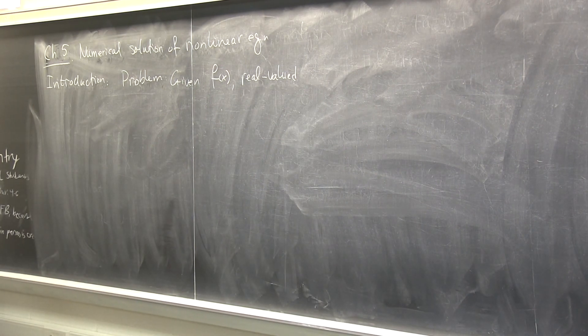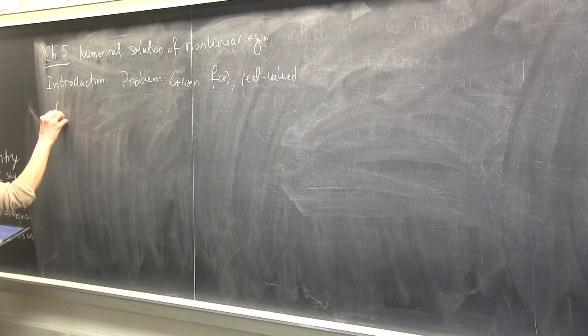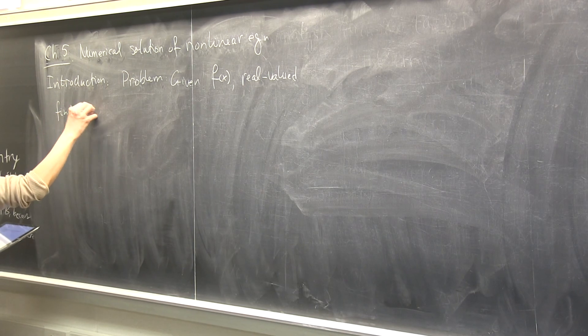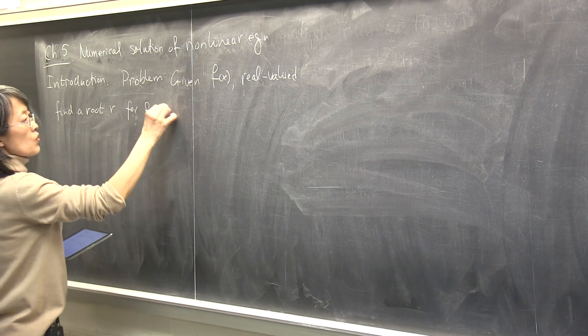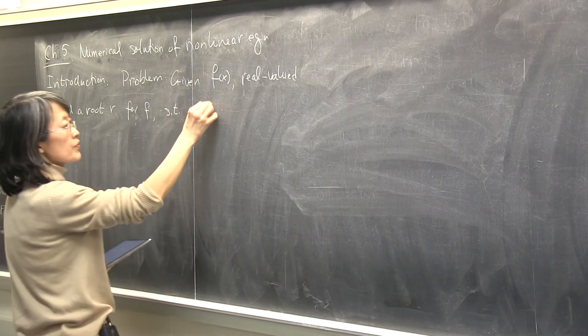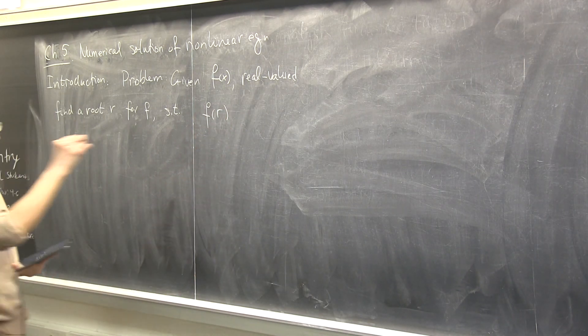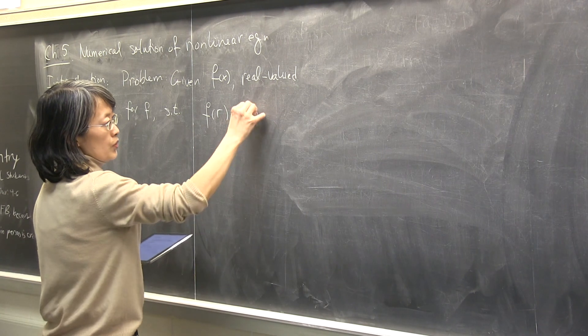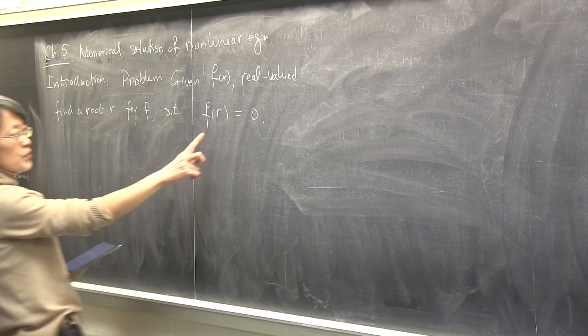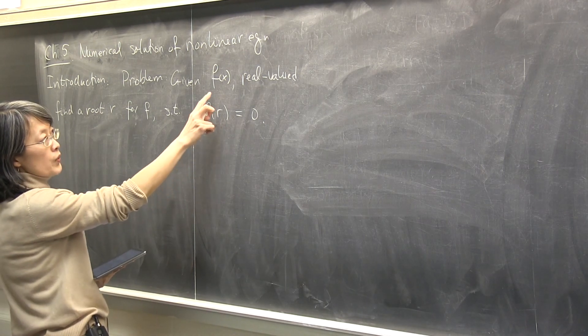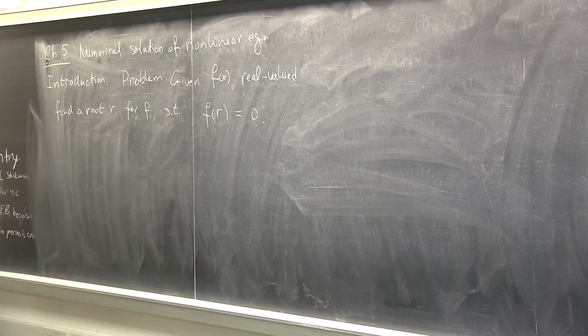Because if it's linear, it's trivial. My goal is now to find a root r for f. What does it mean r is a root for f? F evaluated at the root shall be zero. It's like find the zeros, right? So which means r shall be the solution to the equation f of x equals to zero.